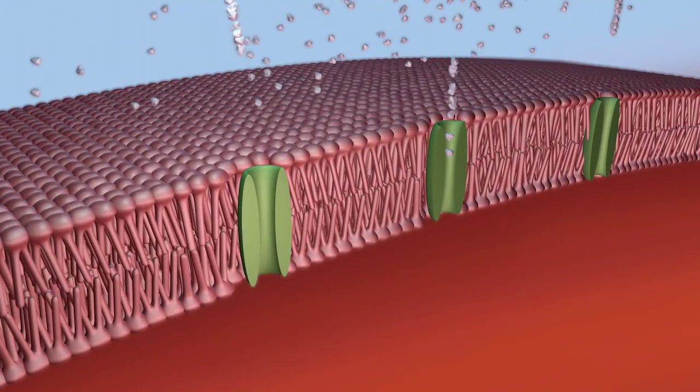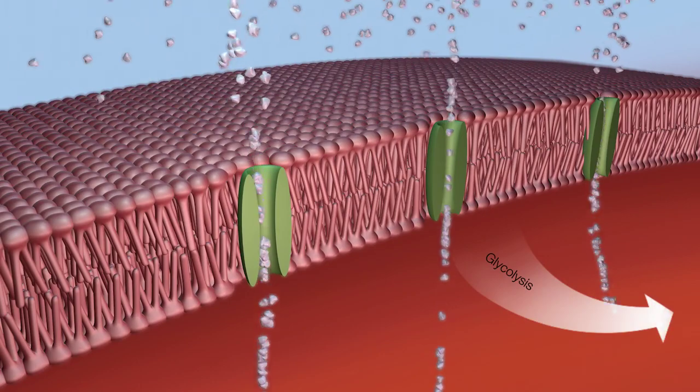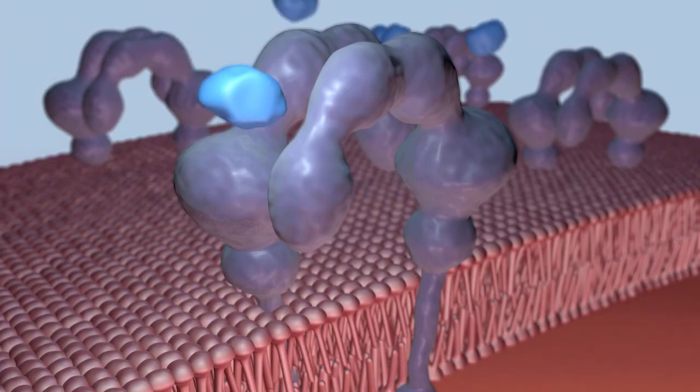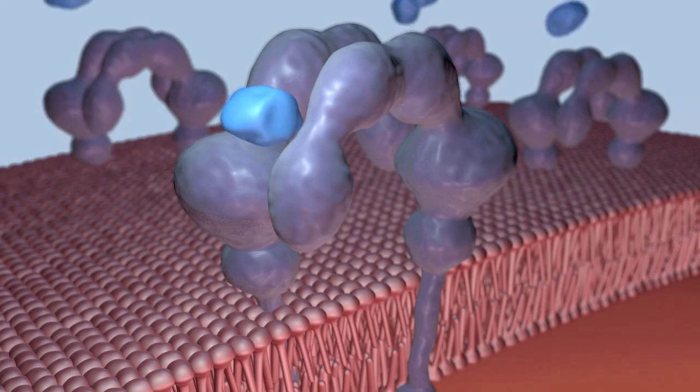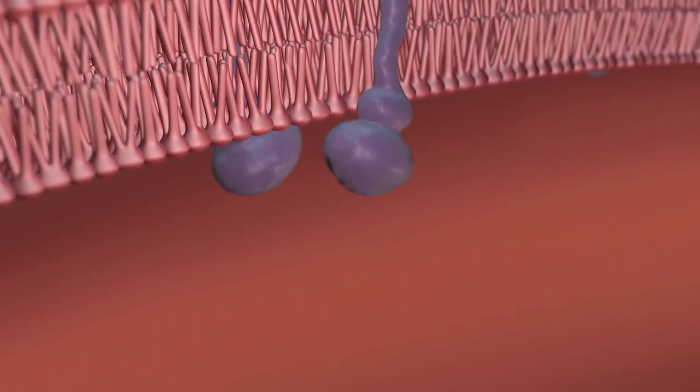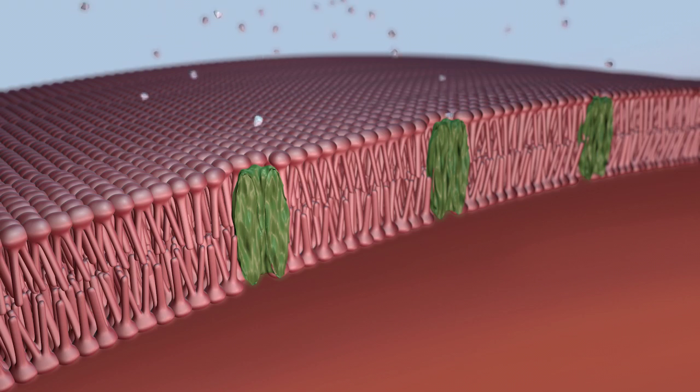Glucose can then enter the cell and begin glycolysis or glycogen synthesis. The mechanisms behind insulin resistance are not well understood. Defective insulin receptors, insulin signaling, or glucose transporters may be the cause.